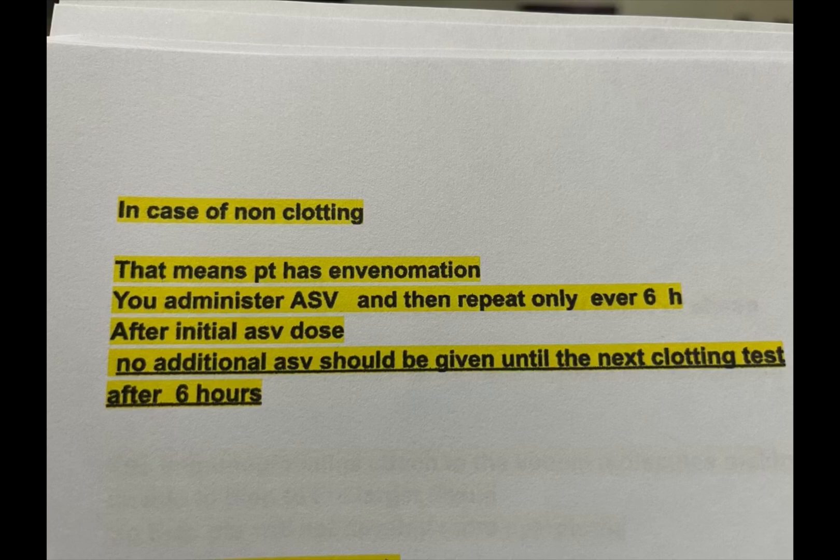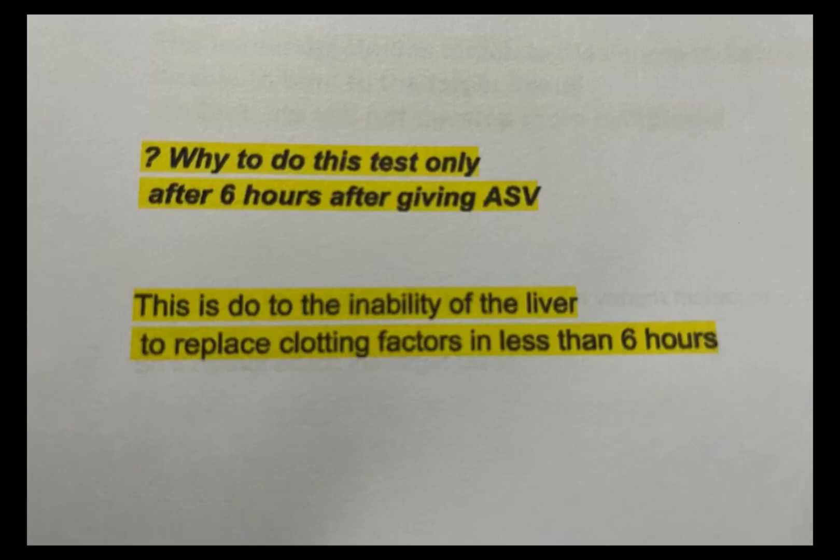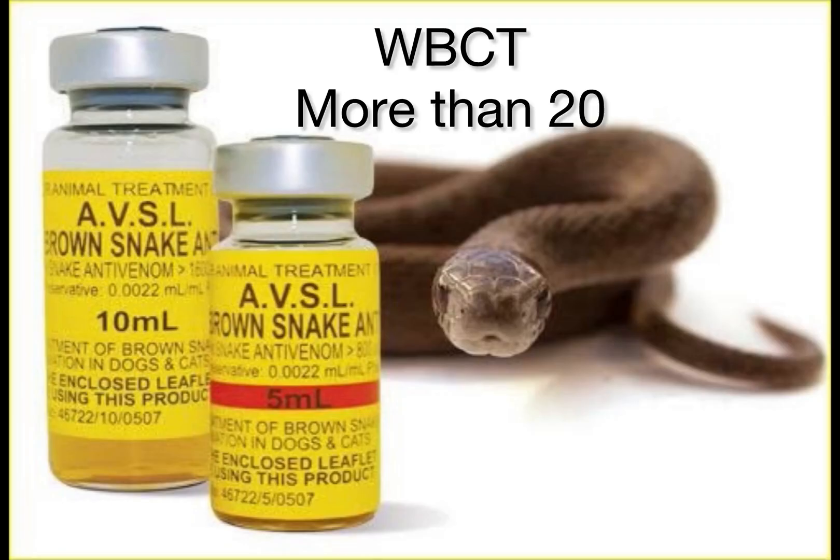After the initial ASV dose, no additional ASV should be given until the next clotting test after 6 hours. Why wait 6 hours? This is due to the inability of the liver to replace clotting factors in less than 6 hours. If the whole blood clotting time is more than 20 minutes, you have to give ASV.